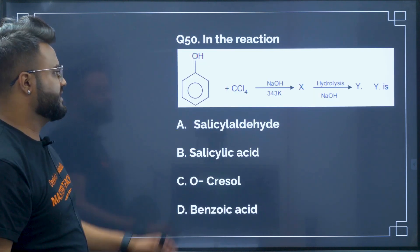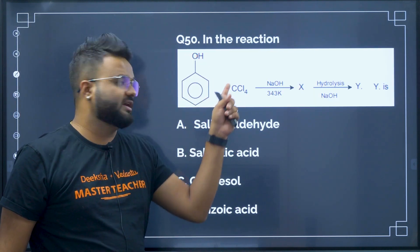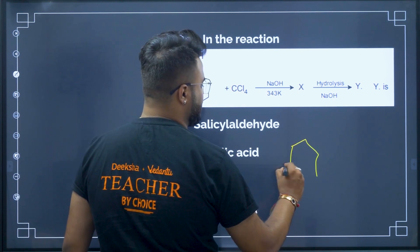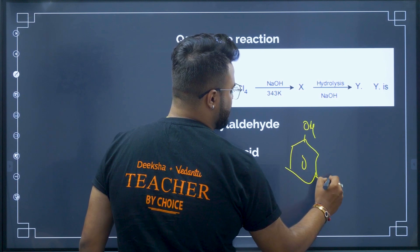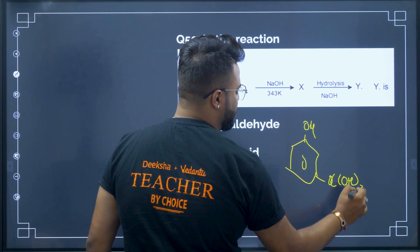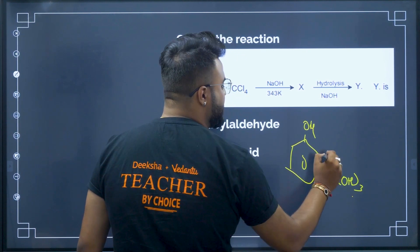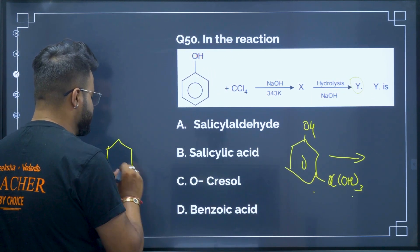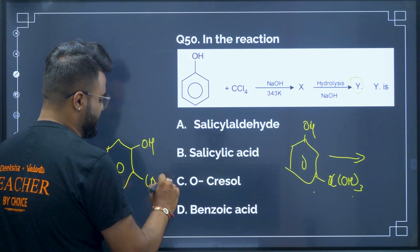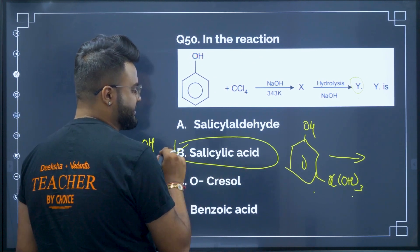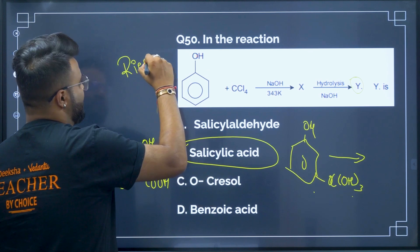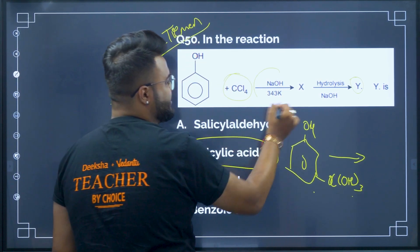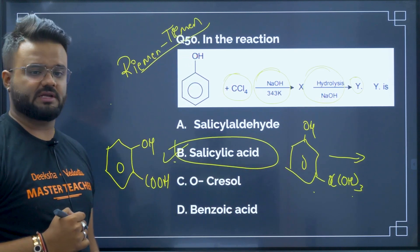Question number 50: when phenol is reacted with carbon tetrachloride in the presence of NaOH, it forms an intermediate product — a phenoxide with –CHO group twice — and upon hydrolysis gives salicylic acid (–COOH group). This reaction is called the Reimer–Tiemann reaction. By seeing these reagents, we can identify it as a Reimer–Tiemann reaction that forms salicylic acid.